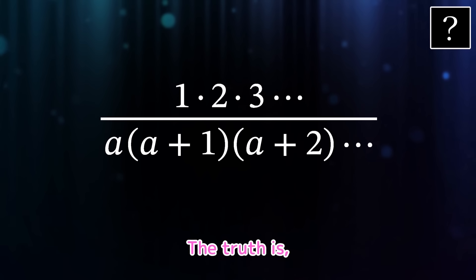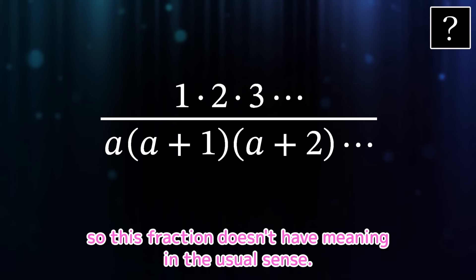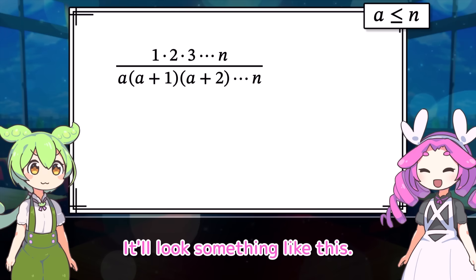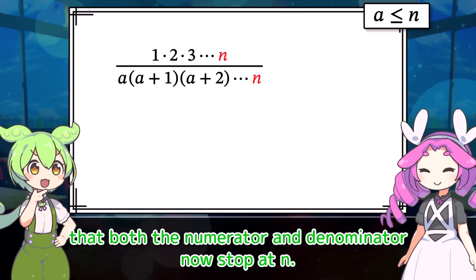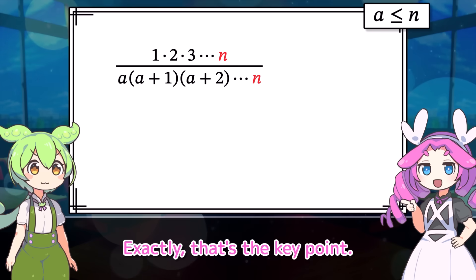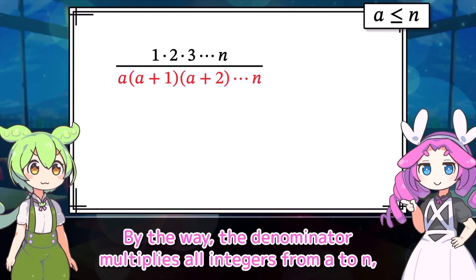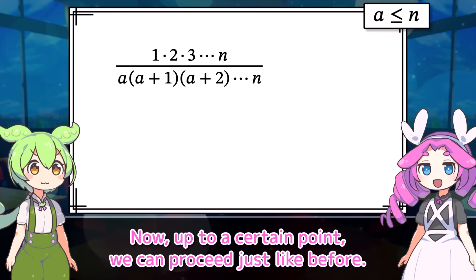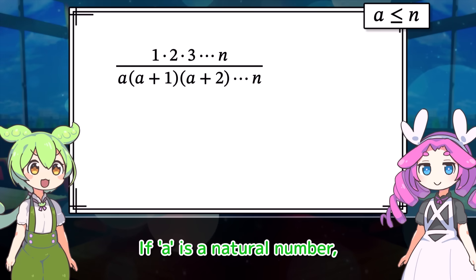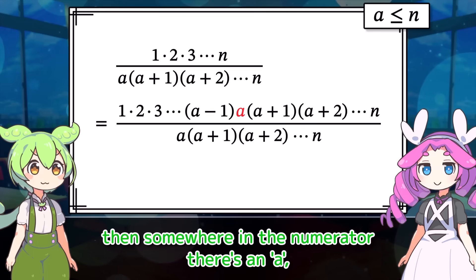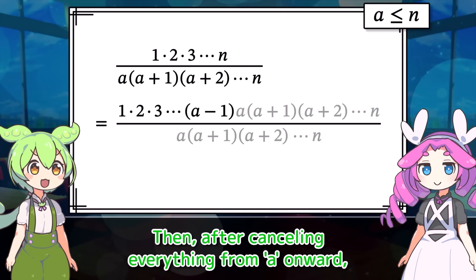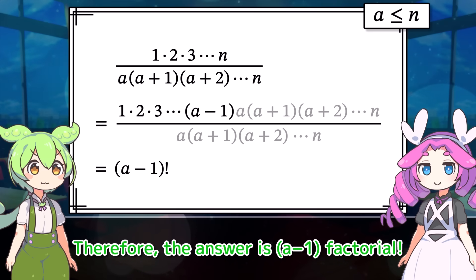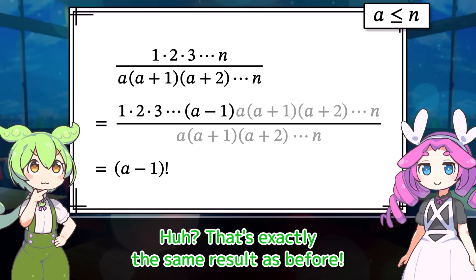How could we give this expression a proper meaning? The truth is, both the numerator and denominator diverge to infinity, so this fraction doesn't have meaning in the usual sense. So let's start by expressing it as a finite product. The difference from before is that both the numerator and denominator now stop at n. That's the key point. The denominator multiplies all integers from a to n, so note that a must satisfy a certain inequality with respect to n. If a is a natural number, then somewhere in the numerator there's an a, and after cancelling everything from a onward, 1 through a minus 1 remain. Therefore the answer is (a-1) factorial — exactly the same result as before.